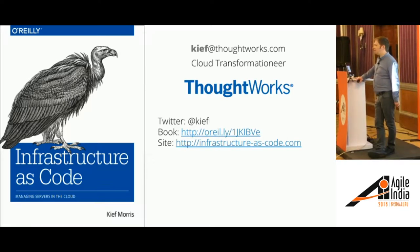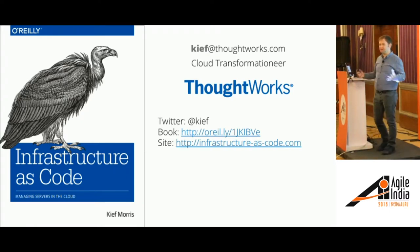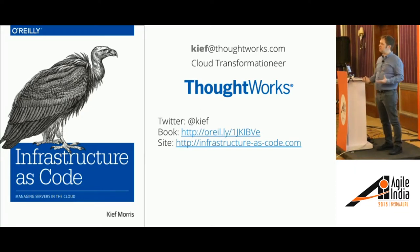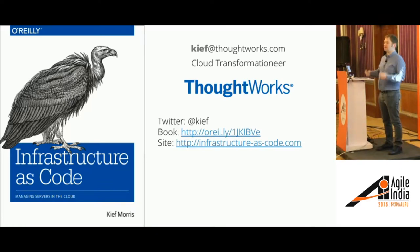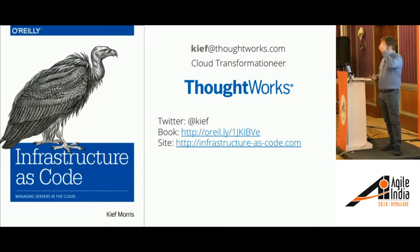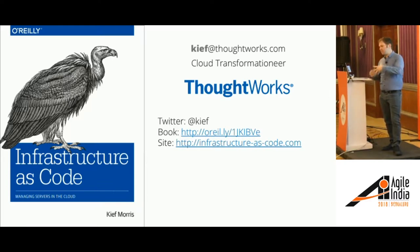I wrote this book, Infrastructure as Code, to capture patterns and practices. The term had been around since about 2006, around the time that the term DevOps came out — some of the same people coined the term. It's a bit murky as to who actually came up with it, but it kind of emerged in those days. I've tried to capture patterns and practices for implementing automation — things that I've been talking with people about how to do.